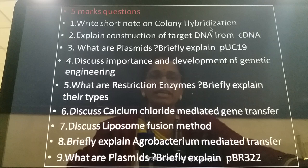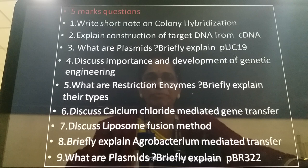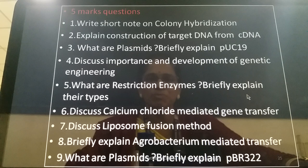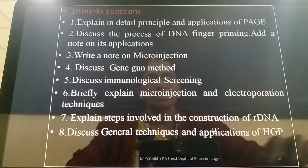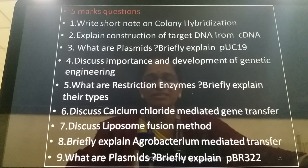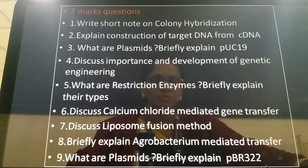For 5-mark questions: write a short note on colony hybridization; explain construction of target DNA from cDNA; what are plasmids — briefly explain PUC-19; discuss the importance and development of genetic engineering; what are restriction enzymes — briefly explain their types; discuss calcium chloride-mediated gene transfer; discuss liposome fusion method; briefly explain Agrobacterium-mediated gene transfer; and what are plasmids — briefly explain PBR-322.